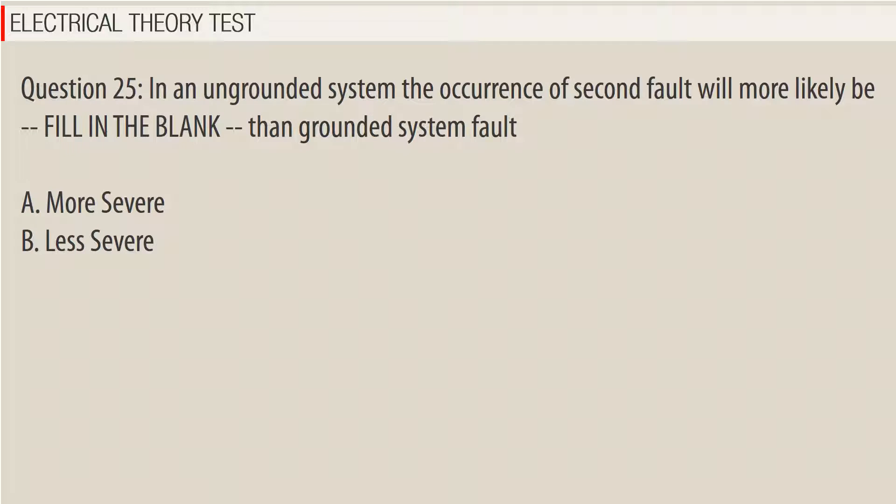Question 25: In an ungrounded system, the occurrence of a second fault will more likely be _____ than a grounded system fault. A. More severe, B. Less severe. Answer: A.